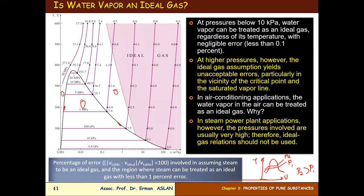Below 10 kPa, all the gas — regardless of its temperature — the water vapor is treated as an ideal gas. At high pressure, however, the ideal gas assumption yields unacceptable errors, so at high pressure, water vapor cannot be treated as an ideal gas.